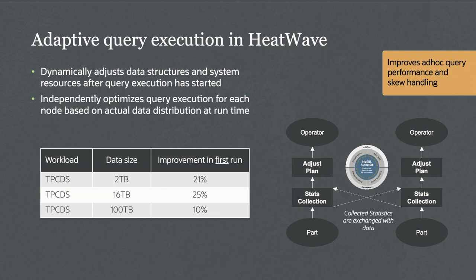Adaptive query execution means HeatWave is smart while you're running the query — not just on the next run. As Nipun's demo showed, running the same query a second time was about 33-50% faster because Autopilot collected statistics during the first run. Now with adaptive query execution, HeatWave figures out it should do things differently mid-query, so the first query completion is faster than before. Looking at TPC-DS queries across various data sizes, the improvement on the first run ranges from 10% in the worst case to 25% in the best case.